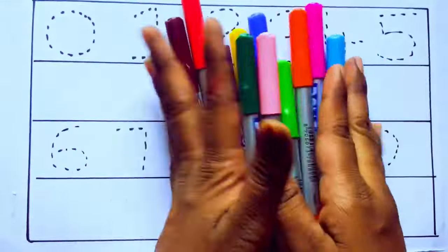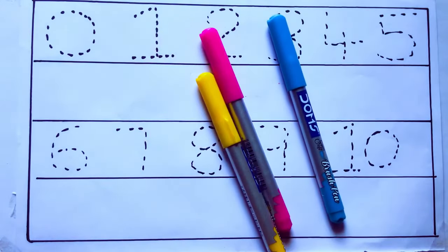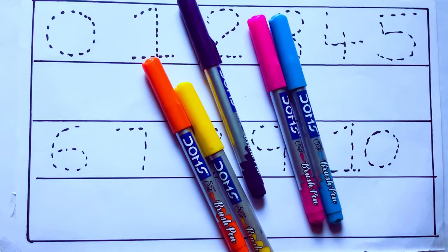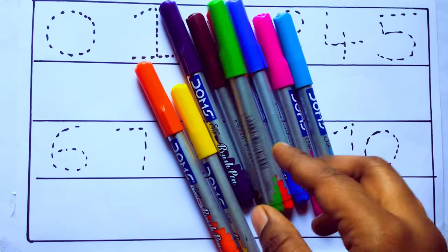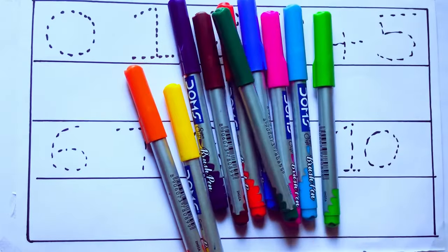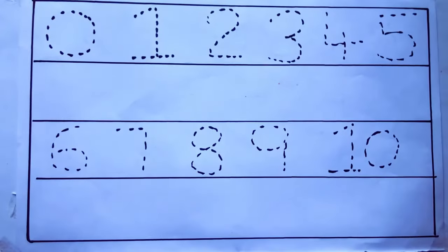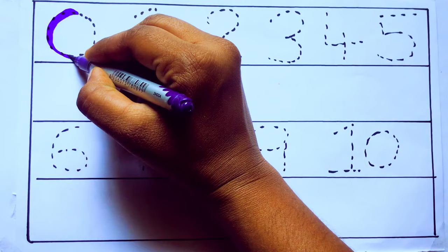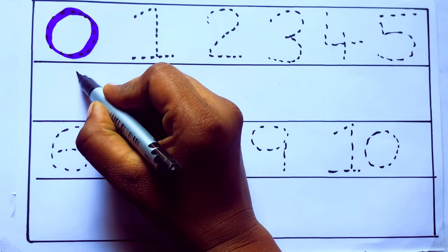Let's learn some colors. These are all the color pencils. Let's learn the names: sky blue, pink, yellow, orange, violet, blue, brown, red, green, blue-green, and pink. Let's draw numbers. Violet color, zero. Z-E-R-O. Zero.